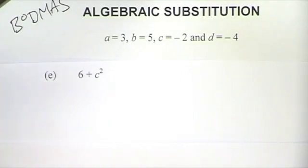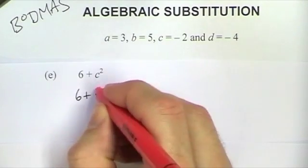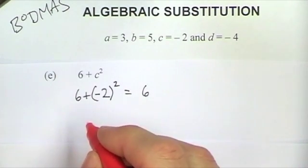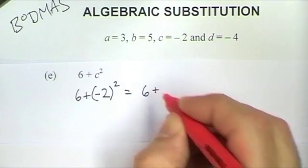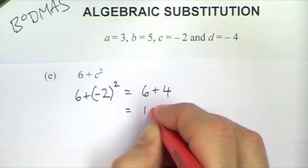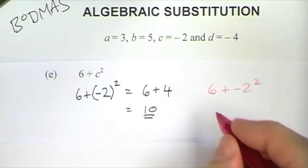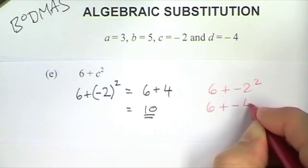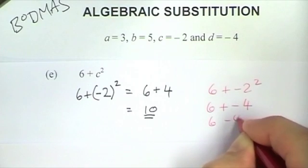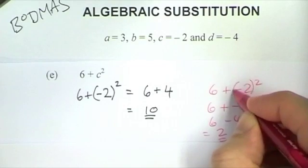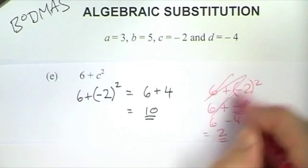This expression is 6 plus c squared. So that stays as 6 plus c is minus 2, so that's minus 2 squared. I'm going to write the minus 2 in brackets just to emphasise it is minus 2 times minus 2. And that minus 2 times minus 2 is actually 4, because two minuses make a positive. So this expression becomes 6 plus 4, which is 10. A common error here would be to do 6 plus minus 2 squared and get minus 4, giving 6 minus 4 equals 2. But that's wrong because you didn't take into account that it's minus 2 squared, which gives you plus 4.